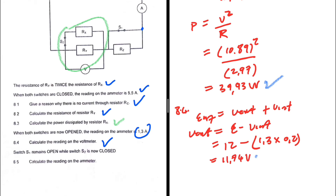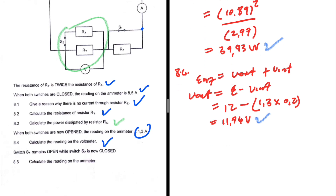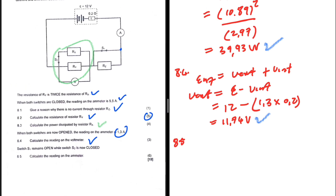The external voltage has increased to 11.74 volts, which is expected because the external resistance has increased. That completes question 8.4. For question 8.5: switch S1 remains open while switch S2 is now closed.